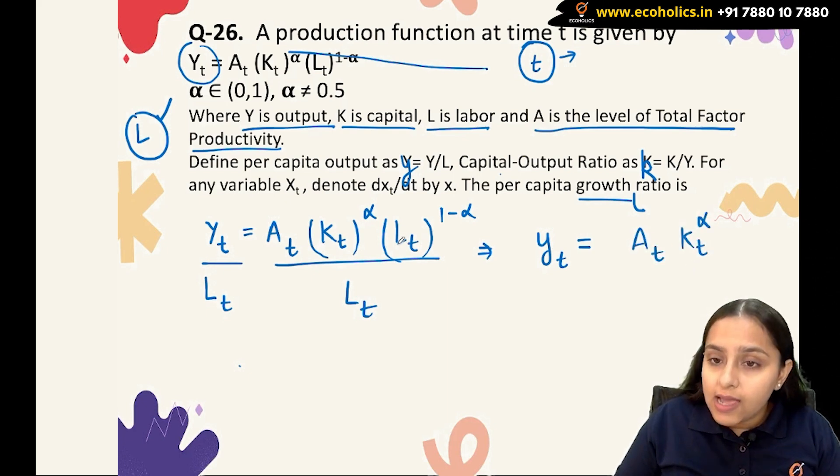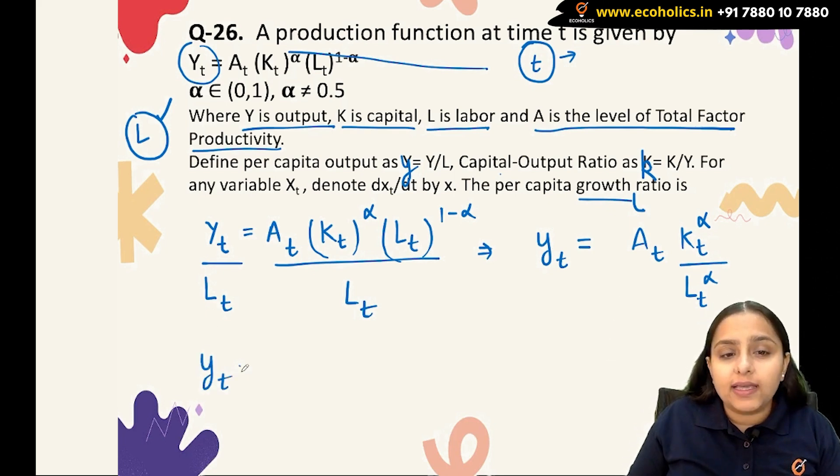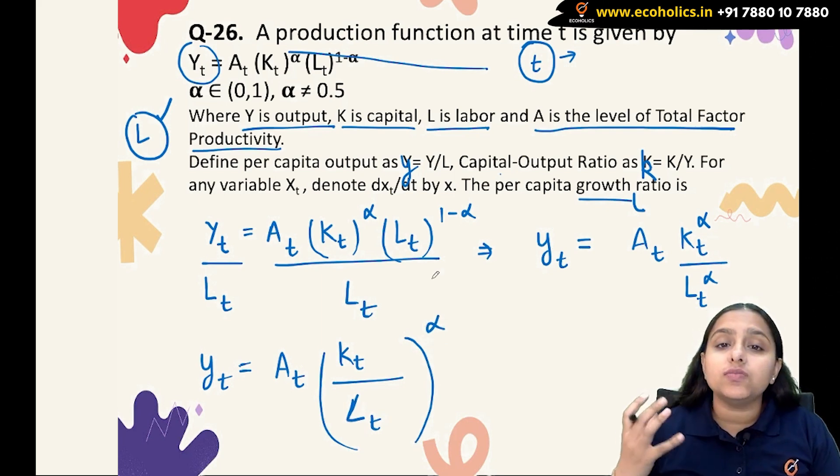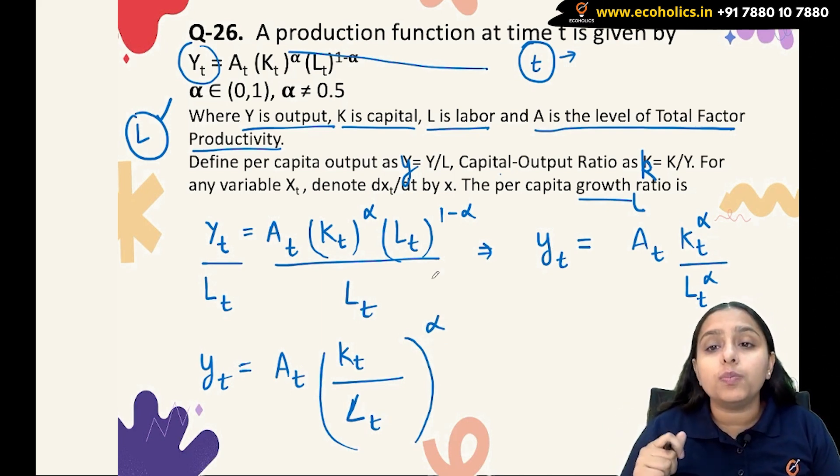You will get A_t(K_t)^α as it is, whereas here you will get (L_t)^(1-α) divided by L_t, which gives (L_t)^α. So y_t = A_t(K_t/L_t)^α.